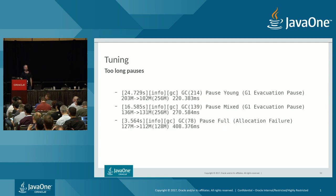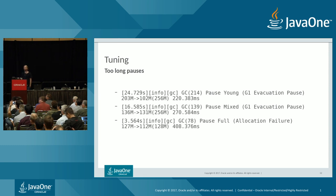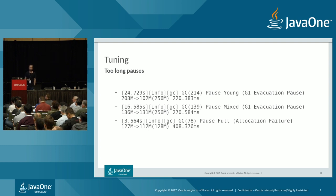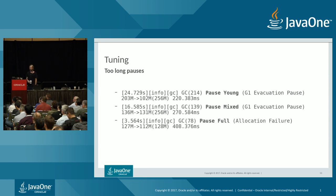But what if setting MaxGCPauseMillis isn't enough? You set it to 200ms but still have pauses of 220ms, 270ms, and even 400ms. The first thing to look at is what kind of pause it is — you must understand what's happening rather than randomly trying JVM flags. We see three different kinds of pauses: one young pause, one mixed pause, and one full pause. We'll look at each in turn.